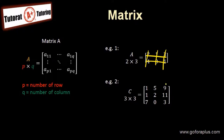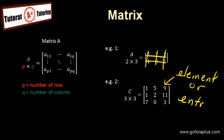Now each element in the matrix — let's say the number 9 — we call this an element, or we call this an entry. Now each of them has a position. The number 9 has a position of 1, 3, meaning 1 is the first row and 3 is the third column.